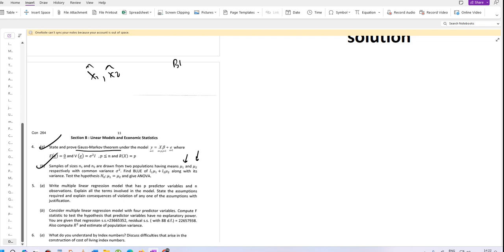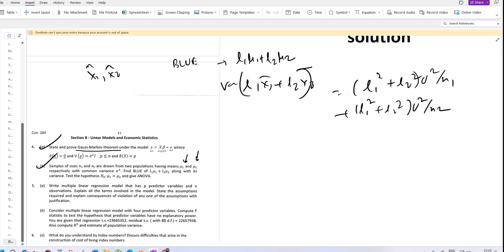The BLUE of L1 mu 1 plus L2 mu 2 is L1 x1 bar plus L2 x2 bar. Its variance is L1 squared over N1 plus L2 squared over N2 times sigma squared.